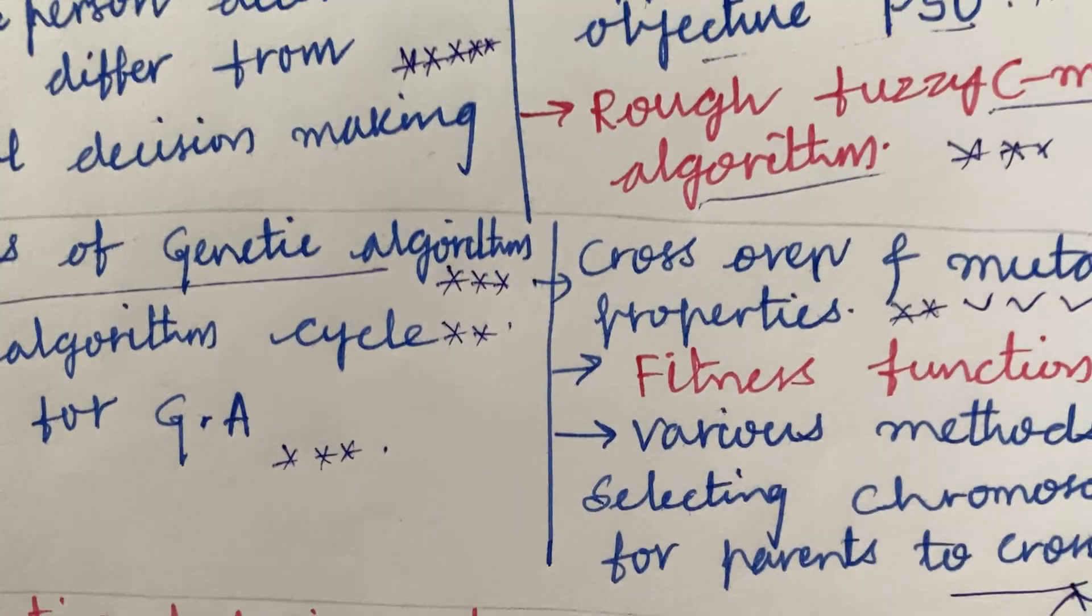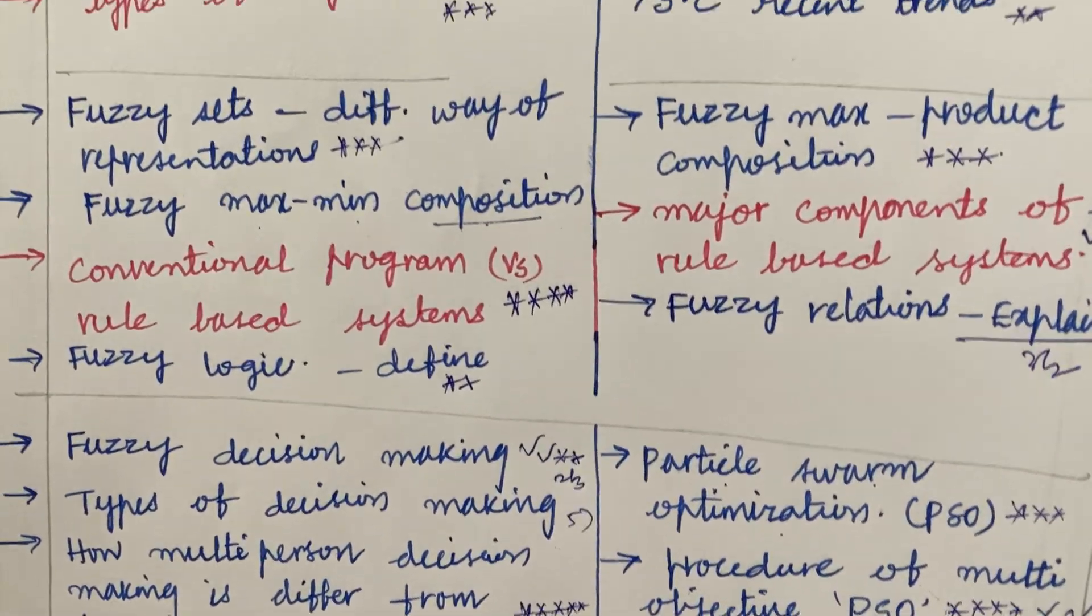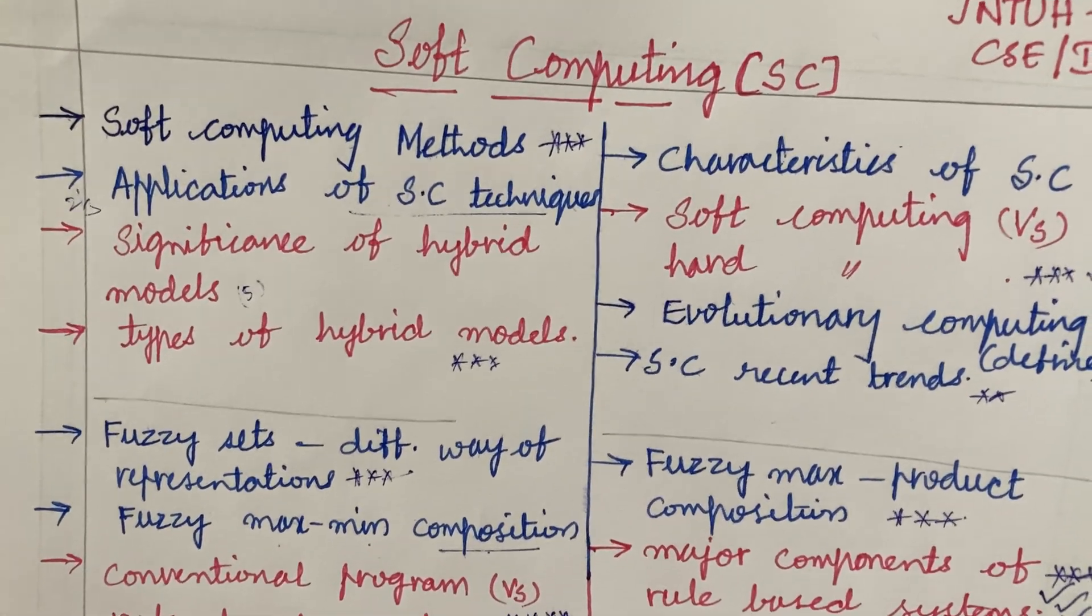Please do work out all these concepts which I have kept on the paper and which I have highlighted in star mark are the gunshot questions which are going to occur this time in your question paper.